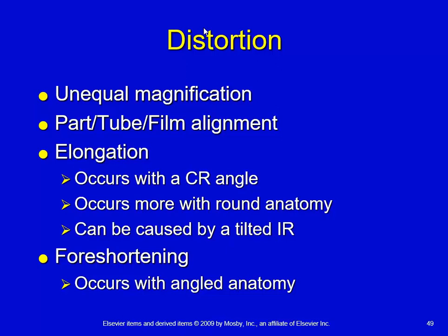If you were to take a ball and put it on your image receptor and angle your central ray, instead of being a nice rounded shape, what you're going to see is an oval very quickly whenever you increase your angulation.